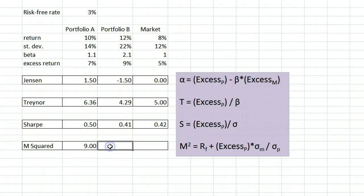For portfolio B, the M-squared measure is the risk-free rate 3, plus the excess return 9, multiplied by the market standard deviation 12, divided by the portfolio standard deviation 22. That gives us 7.9%.